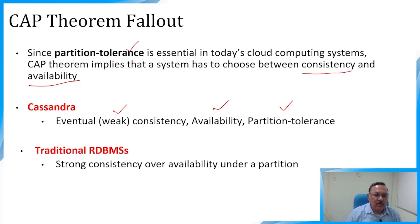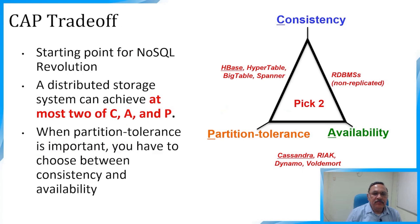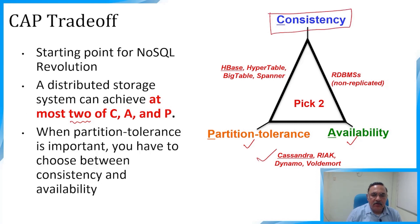Cassandra uses eventual (weak) consistency with availability and partition tolerance — prioritizing AP. Traditional RDBMS follows strong consistency over availability under partition (CP). In the CAP trade-off: systems choosing Availability + Partition Tolerance include Cassandra, Riak, Dynamo, and Voldemort; systems choosing Consistency + Partition Tolerance include HBase, Hypertable, BigTable, and Spanner.